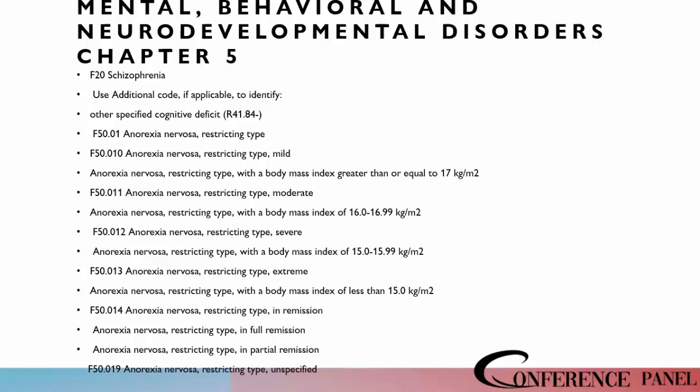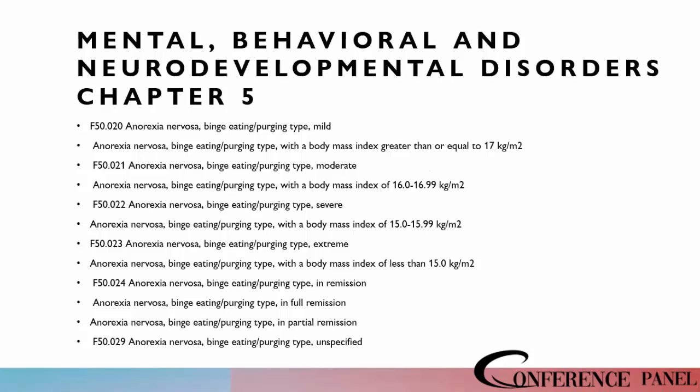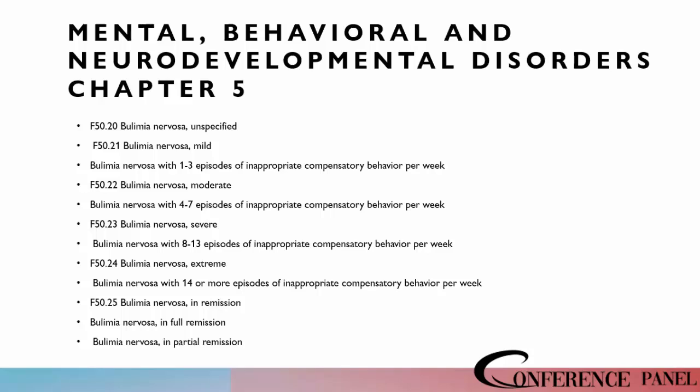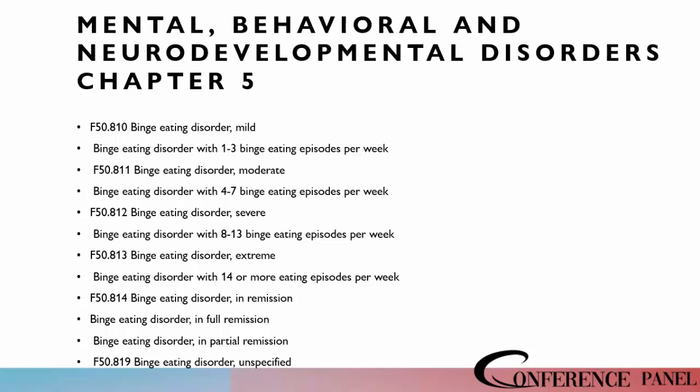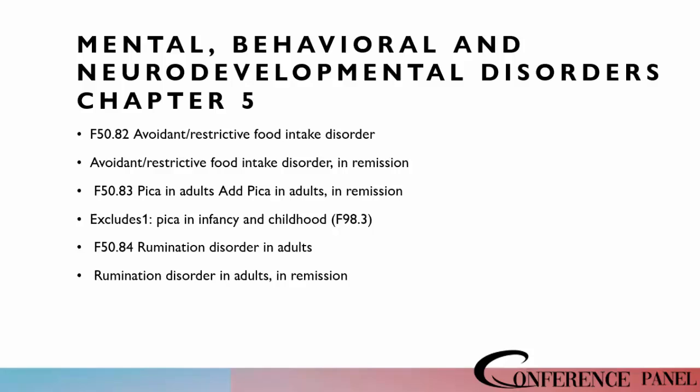Now in chapter five, the mental and neurodevelopmental disorders, we do have a lot of new codes that are going to have to do with patients' dietary situations connected to some type of disorder. We have a good many more things in regards to anorexia, more related to eating disorders. Binge eating is also included, and it will be tied to the number of episodes per week. We also have new codes having to do with avoidant restrictive food intake disorder.